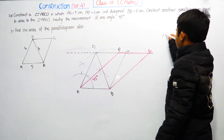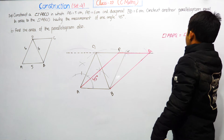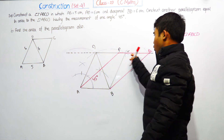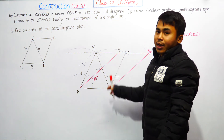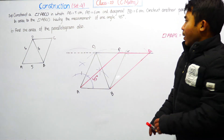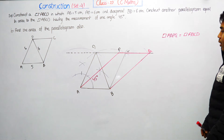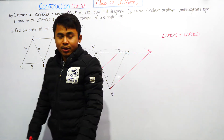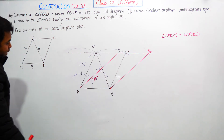This is parallelogram ABPQ. Area of ABPQ is equal to area of ABCD. This is because they share the same parallel lines — Q, D, A, B are between the same parallel lines. The area of each parallelogram equals base into height.